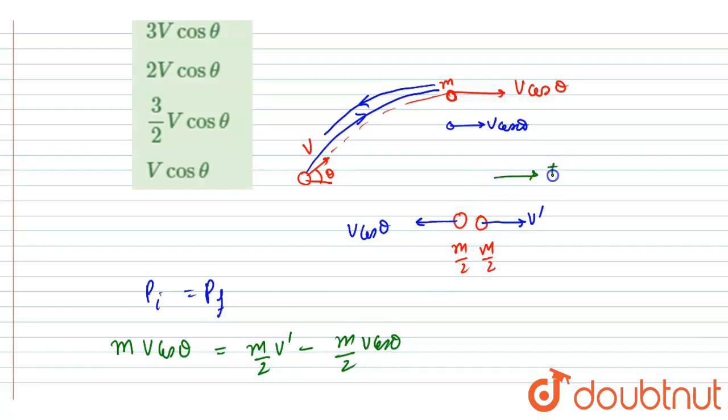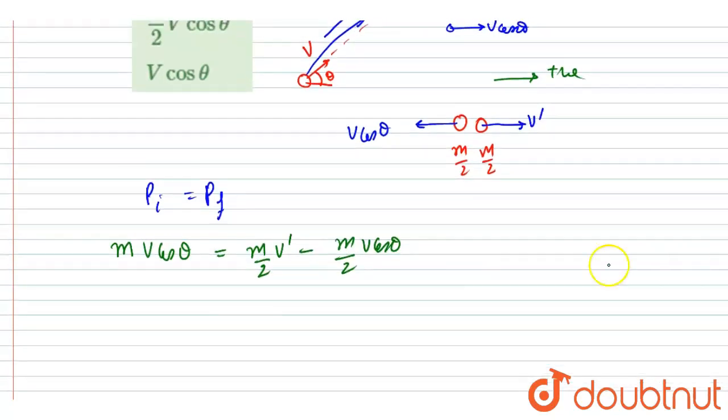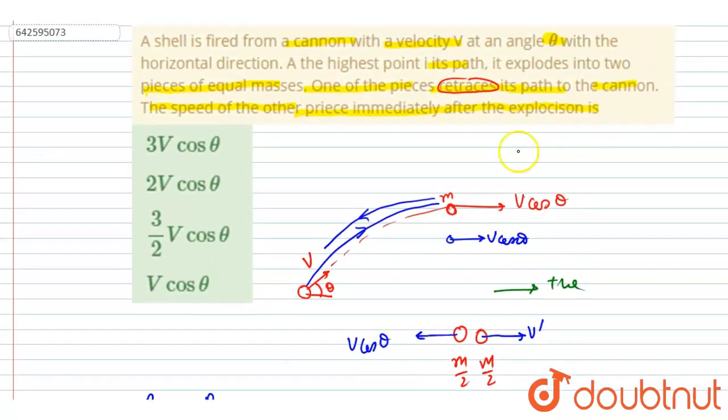we took this direction positive. So this m will get cancelled out, and after solving you will get 3 v cos theta equals v dash. So the velocity of the other particle will be 3 v cos theta. Now you can match the options also, so A will be the correct option. Thank you.